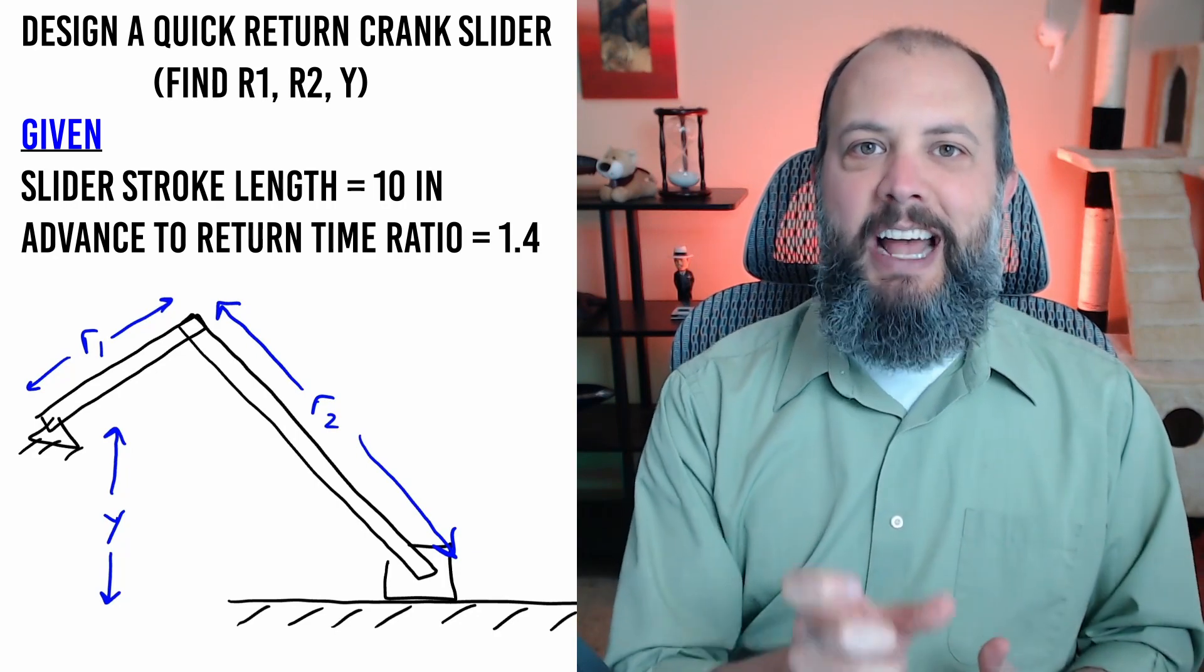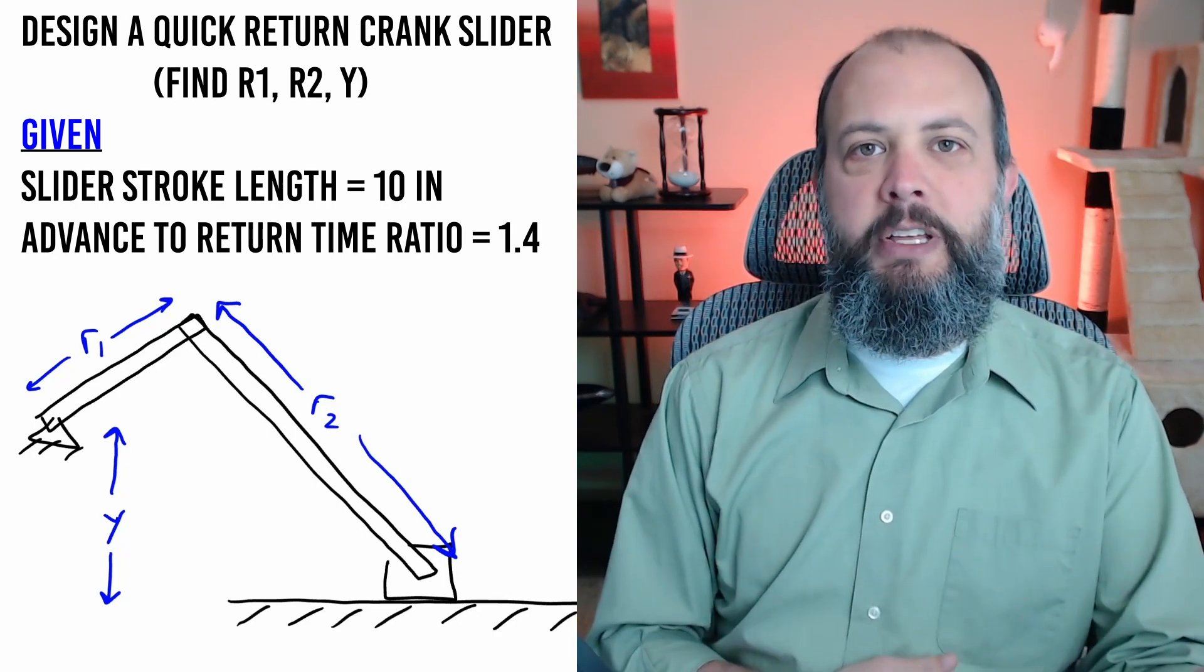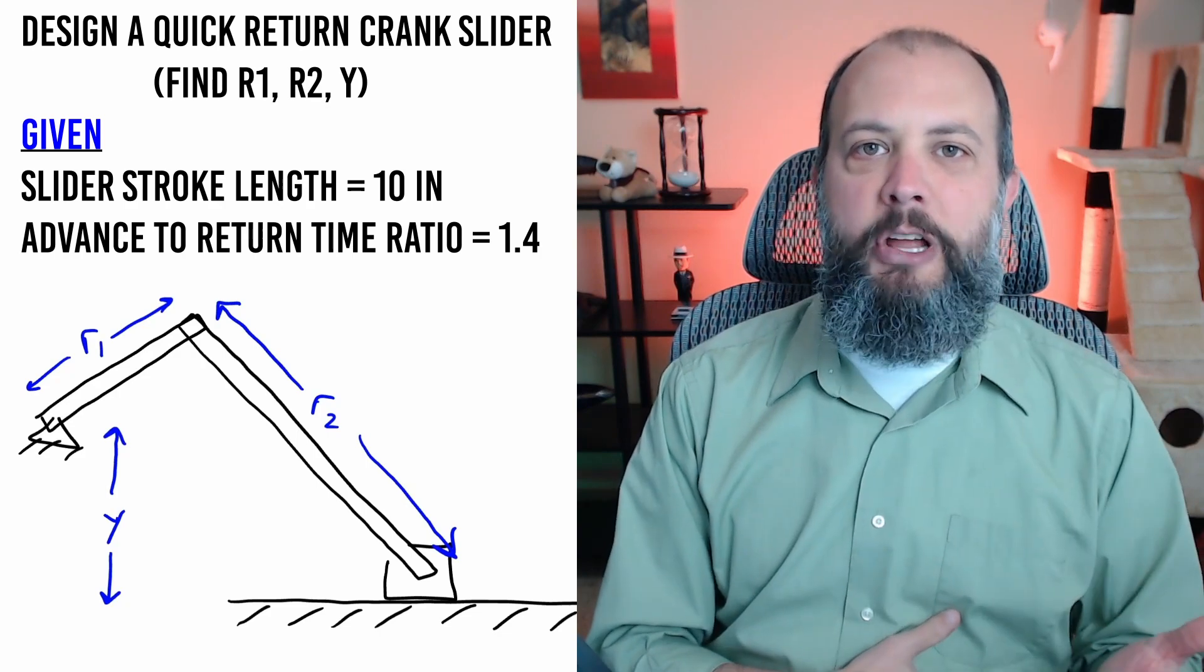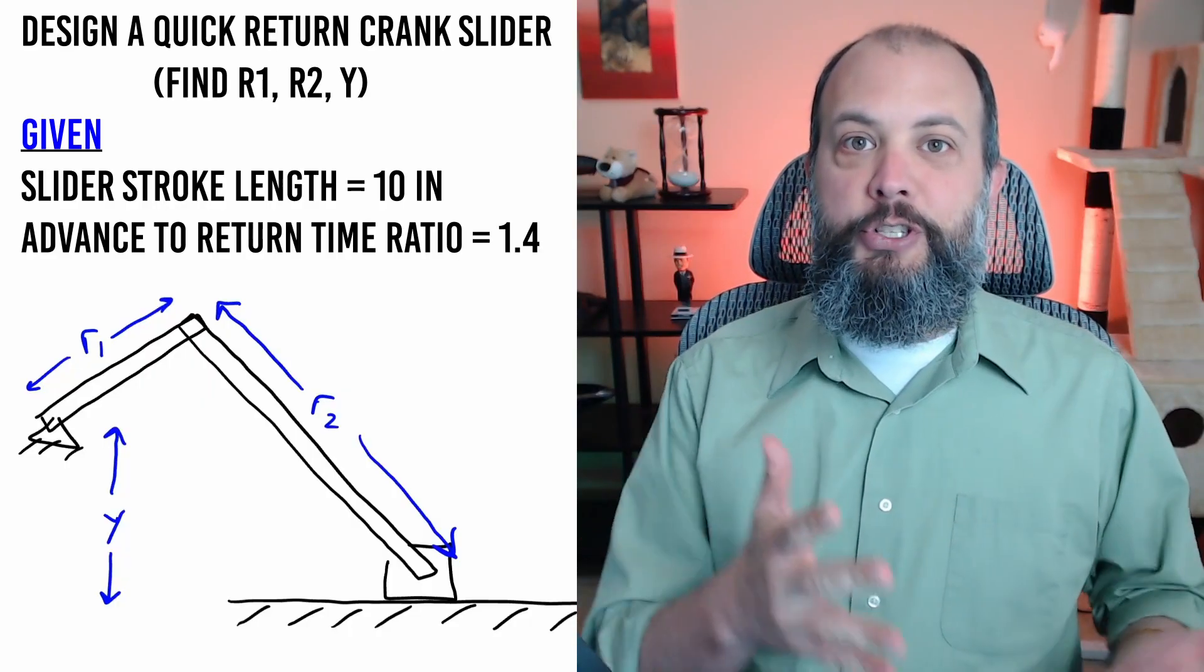And suppose you have two design objectives. You want to achieve a slider stroke length of 10 inches and you want to do this with an advance return time ratio of 1.4. What you'll find is that there's actually an infinite number of solutions to this problem so we get to start off with a choice.